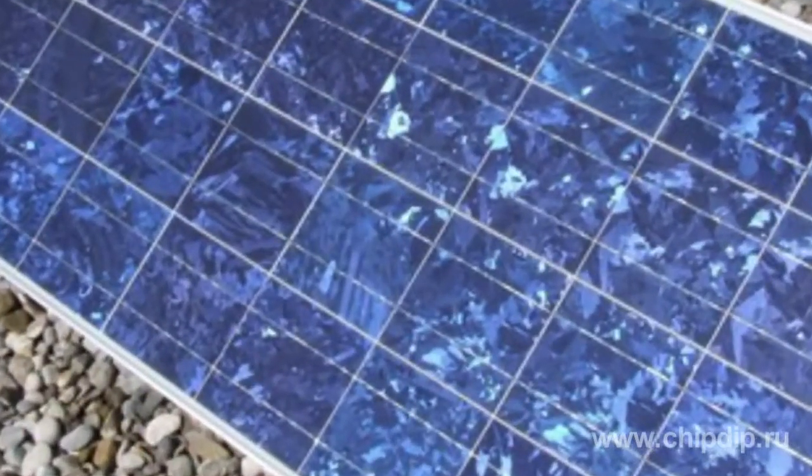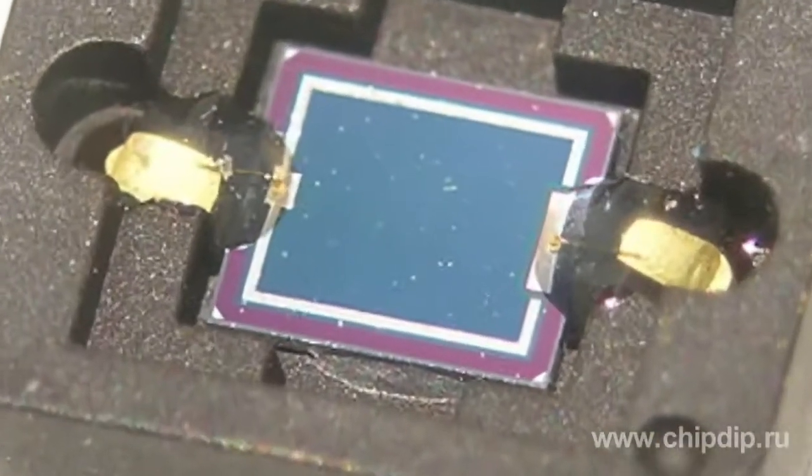Barrier layer photo effect at the junction is a direct conversion of electromagnetic radiation energy into electric current energy. This phenomenon is used in photoelectric current sources such as silicon, germanium and other photoelectric cells.